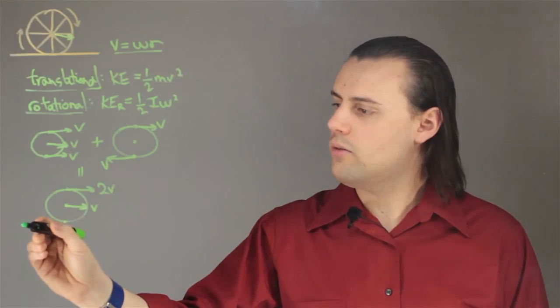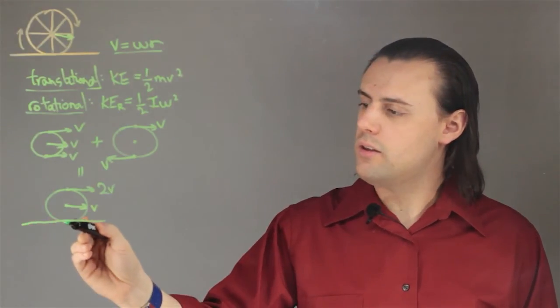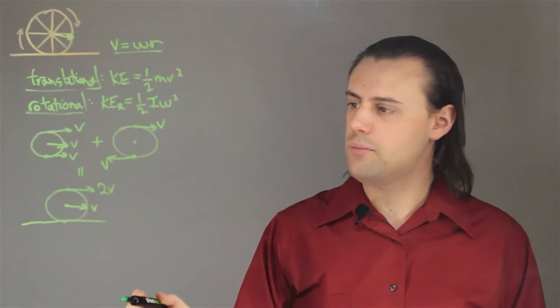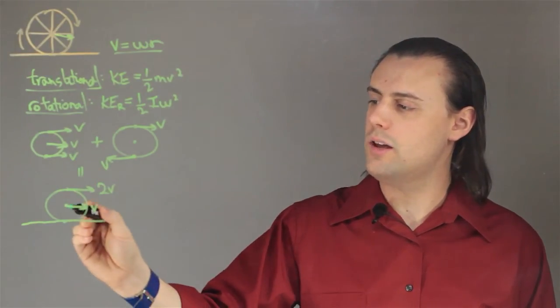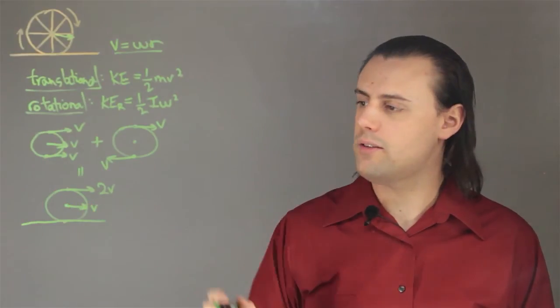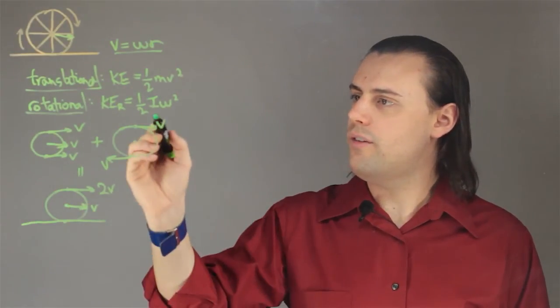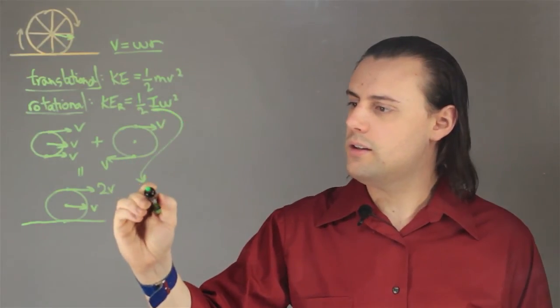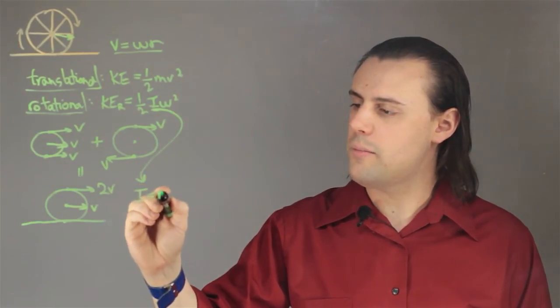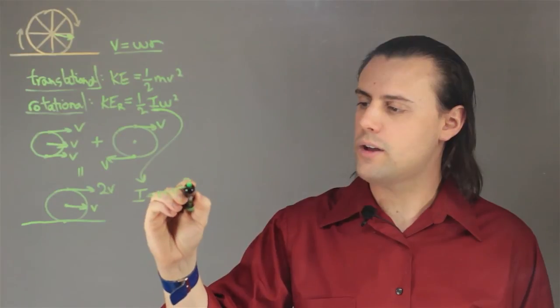So when the wheel is rolling without slipping, the bottom part of the wheel actually isn't moving and the top part of the wheel is moving at twice the velocity as the center of mass of the wheel. Finally, this inertia for the rotational motion is given as the mass of the wheel times the radius squared.